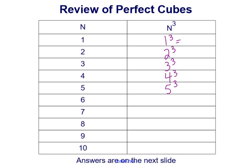That's equal to 1 times 1 times 1. Then we have 2 times 2 times 2. Then we have 3 times 3 times 3, and so on and so forth. Let's complete the first 10 perfect cubes.